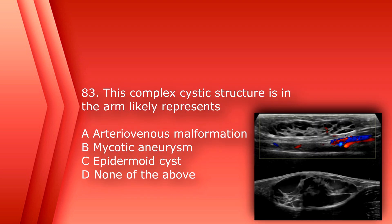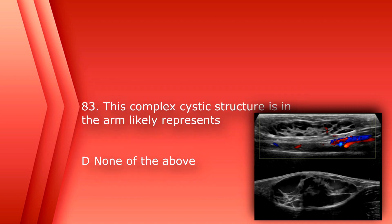Number 83: this complex cystic structure in the arm likely represents A. Arteriovenous malformation. B. Mycotic aneurysm. C. Epidermoid cyst. Or D. None of the above. The answer is D. None of the above — this is a lymphatic malformation. Lymphatic malformations and arterial malformations can look similar on soft tissue imaging, but arteriovenous malformations are very vascular and lymphatic malformations aren't.